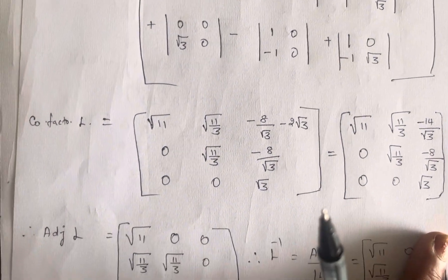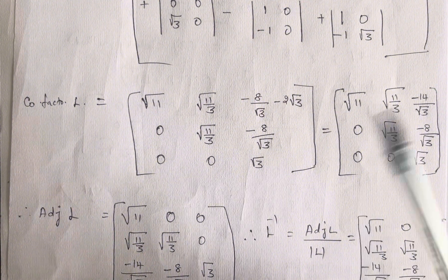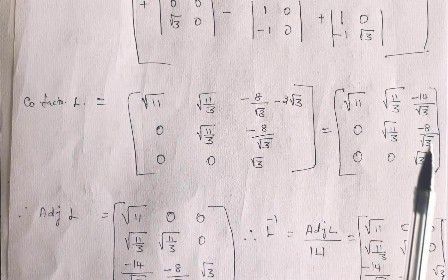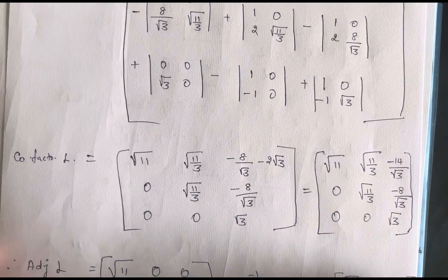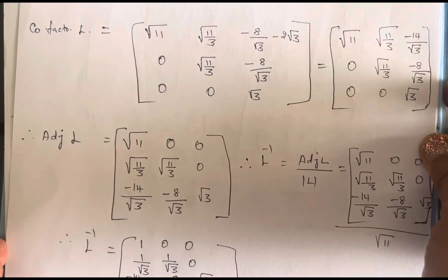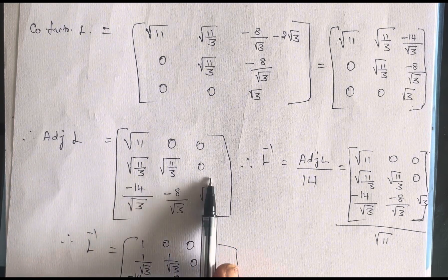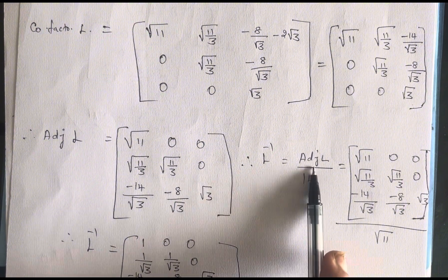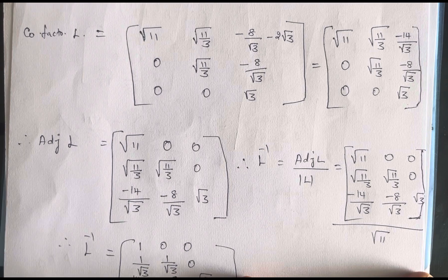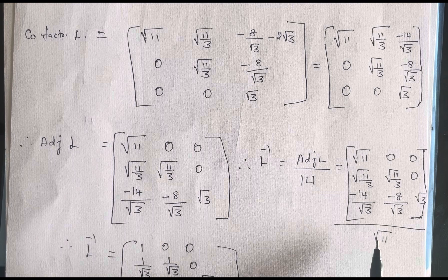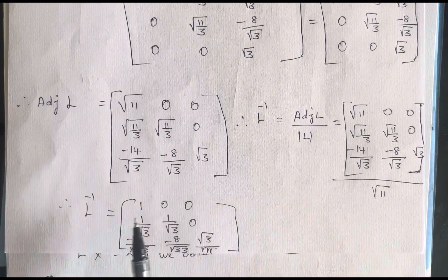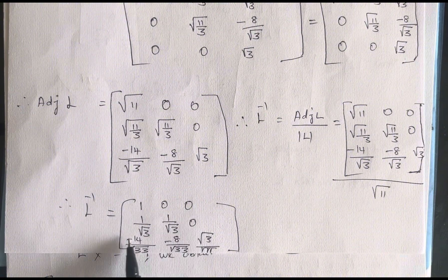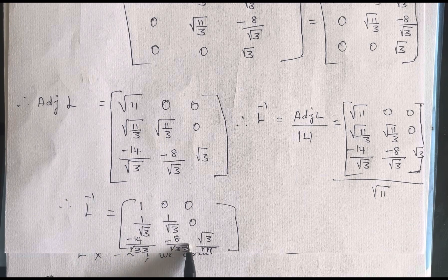The adjugate of L is the transpose of the cofactor matrix, giving adj(L) = [[√11, 0, 0], [√(11/3), √(11/3), 0], [-14/√3, -8/√3, √3]]. Therefore L⁻¹ = adj(L) / det(L) = adj(L) / √11. On simplification, L⁻¹ = [[1, 0, 0], [1/√3, 1/√3, 0], [-14/√33, -8/√33, √(3/11)]].